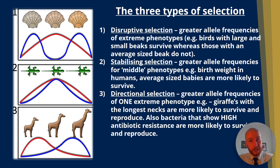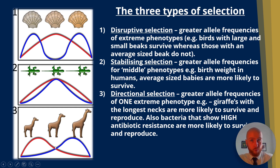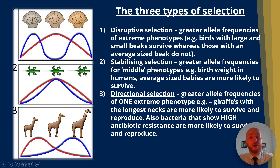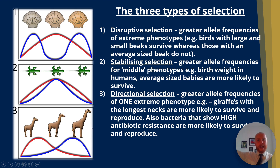Finally we have directional selection, where the frequency of alleles shifts towards one extreme. A classic example is the giraffe's neck — giraffes with the longest necks are more likely to get food, survive, and reproduce, which is why we see giraffes with those really long necks for reaching leaves at the top of acacia trees.